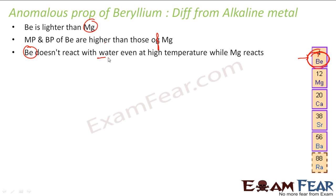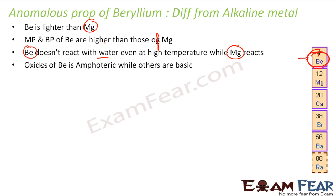Beryllium does not react with water even at high temperature, but magnesium does react with water. This is another difference beryllium has with other alkaline earth metals. The oxide of beryllium is amphoteric while others are basic — Be(OH)2 is amphoteric, whereas magnesium hydroxide and calcium hydroxide are all basic in nature.